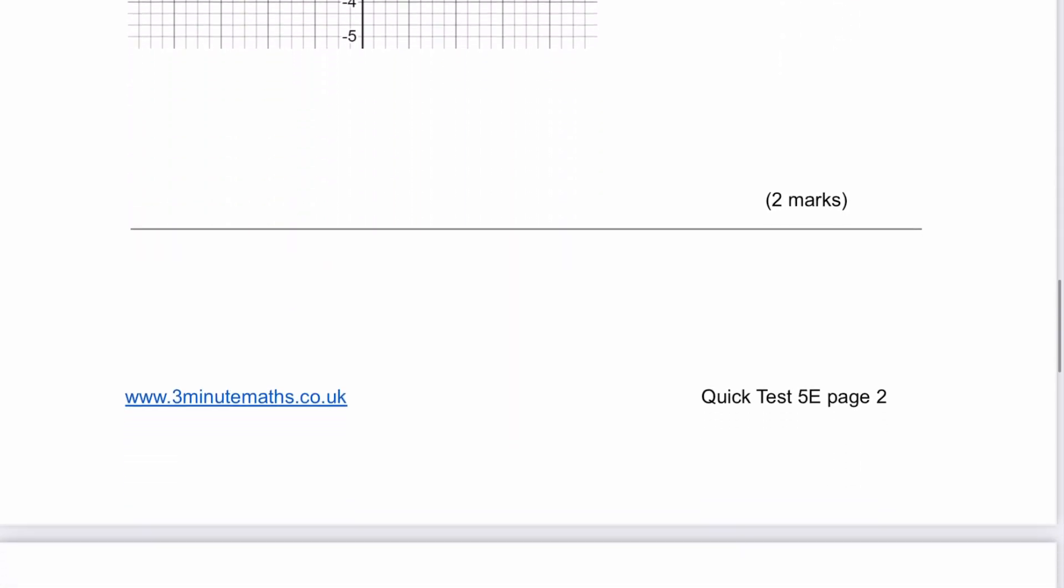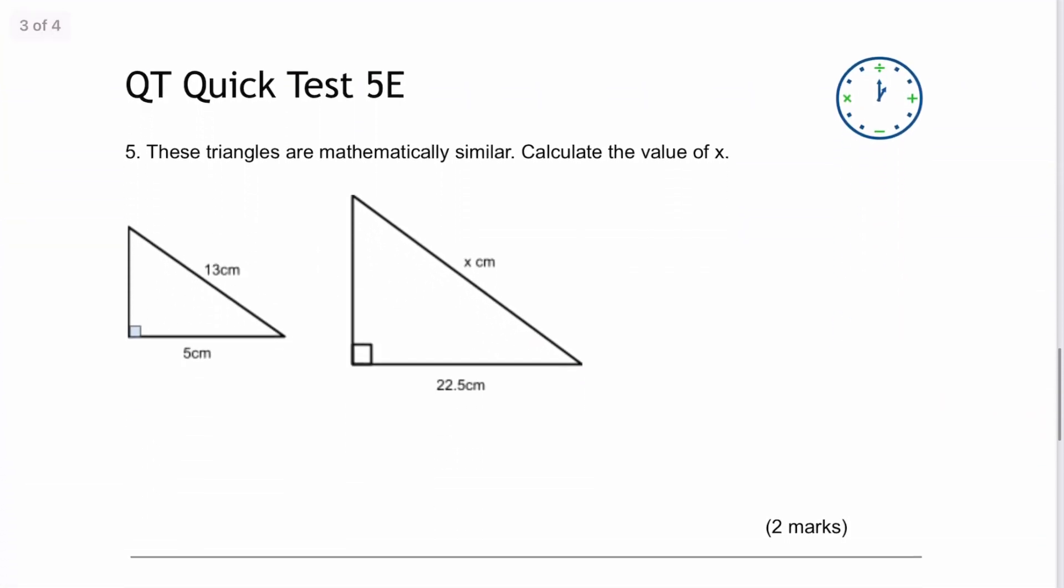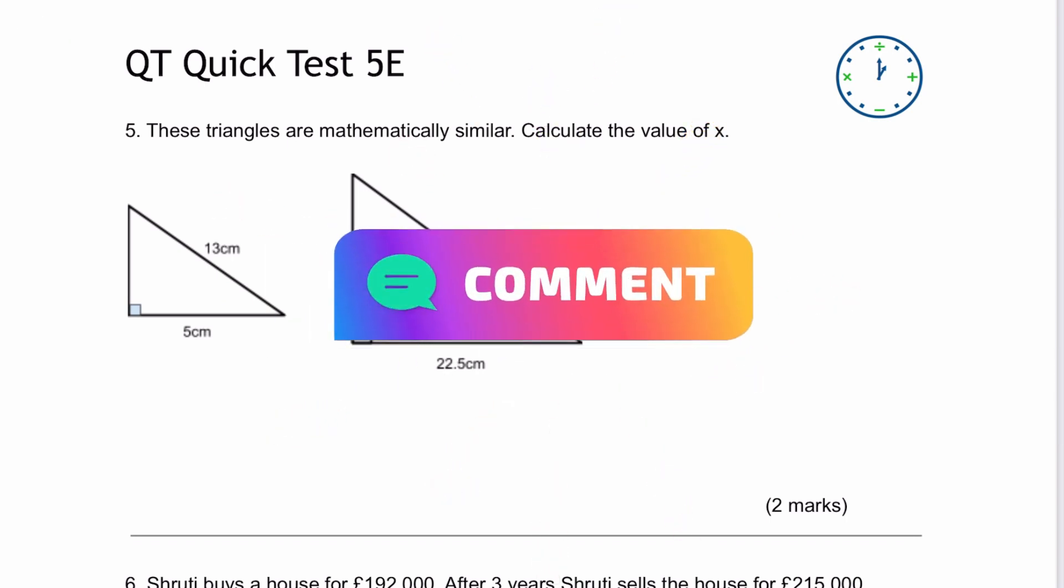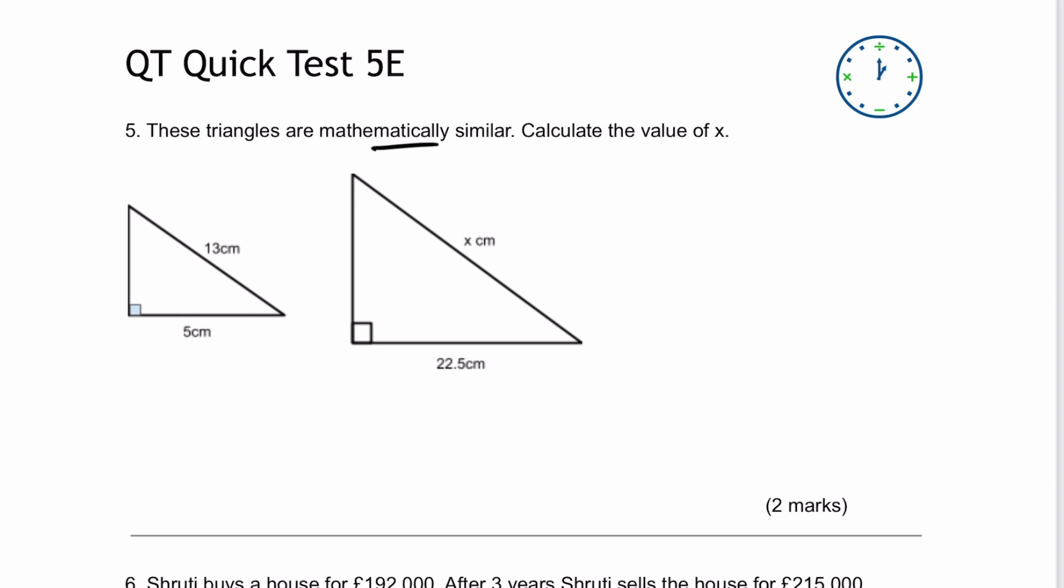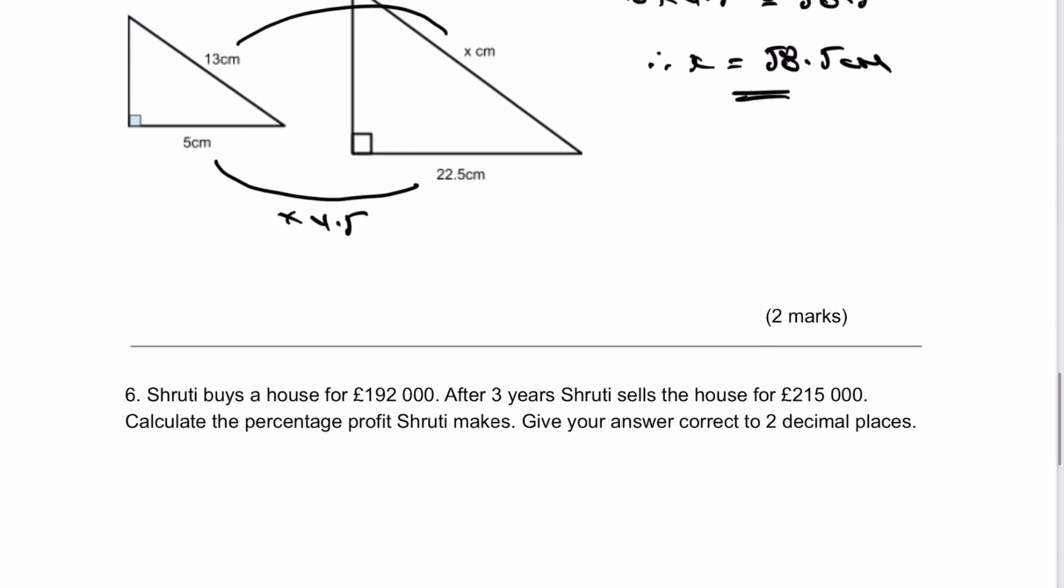Let's move on to question number 5. I'm going to work through all of this worksheet. If we have a look at this, the key issue is that the triangles are mathematically similar. All the sides have the same scale factor, which is 5 times 4.5 giving us 22.5. Therefore, if I want to find the value of x, it's going to be 13 times 4.5, which equals 58.5. Therefore x equals 58.5 centimetres, and for two marks that's the answer.